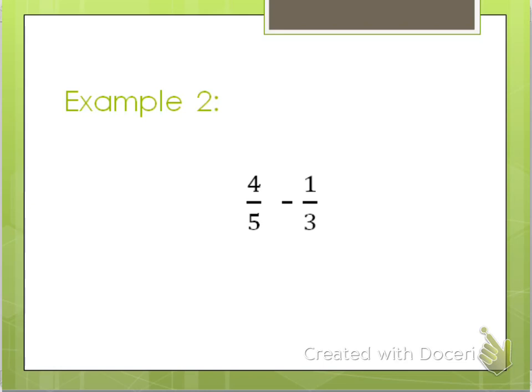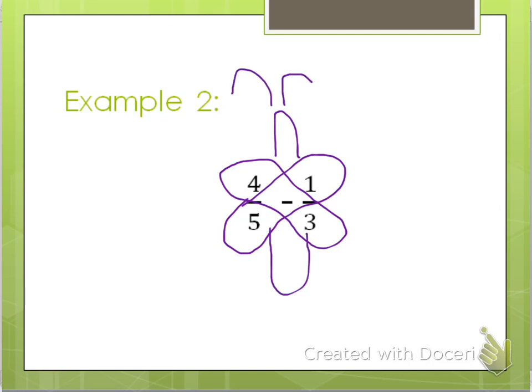And just as in the previous example, I'm going to draw a butterfly around my problem here. And so I drew my two wings, and of course I have to have a butterfly head and a couple antennae, and I finish up my butterfly by drawing the rest of its body below the wings.